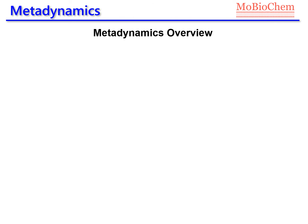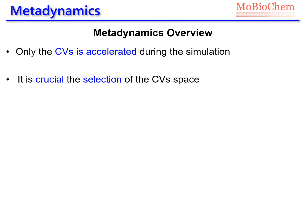In summary, to run a metadynamic simulation, one has first to choose the set of collective variables that will be accelerated during the simulation. This selection is crucial to have a physical result of the free energy surface, that is directly related to the applied bias potential.